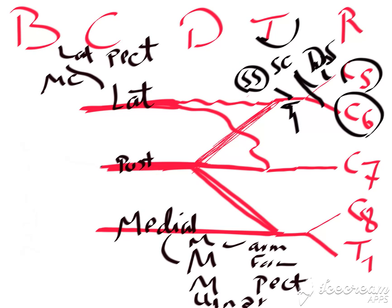Also we have the long thoracic nerve of Bell to serratus anterior, from C5, C6, and C7.